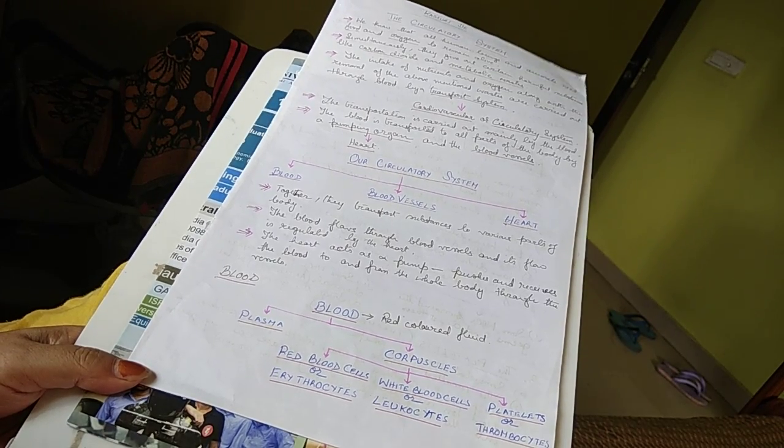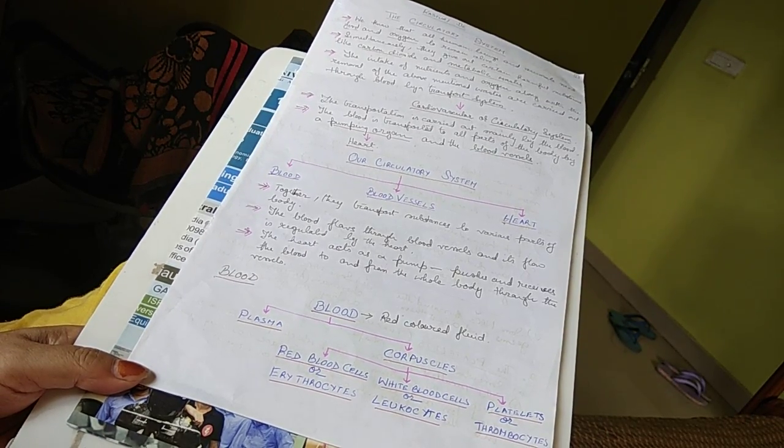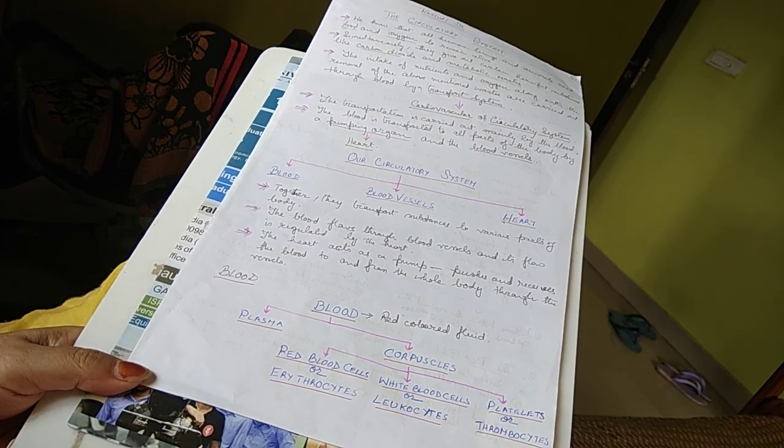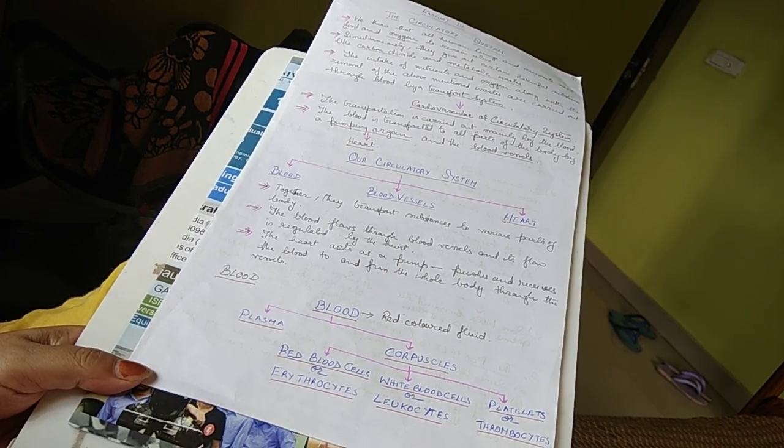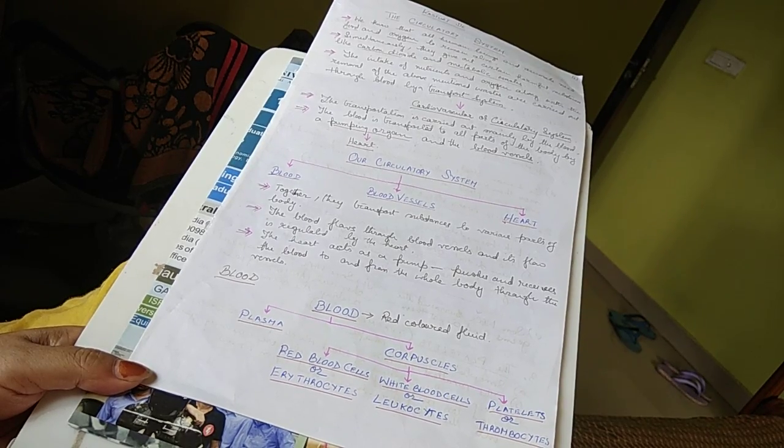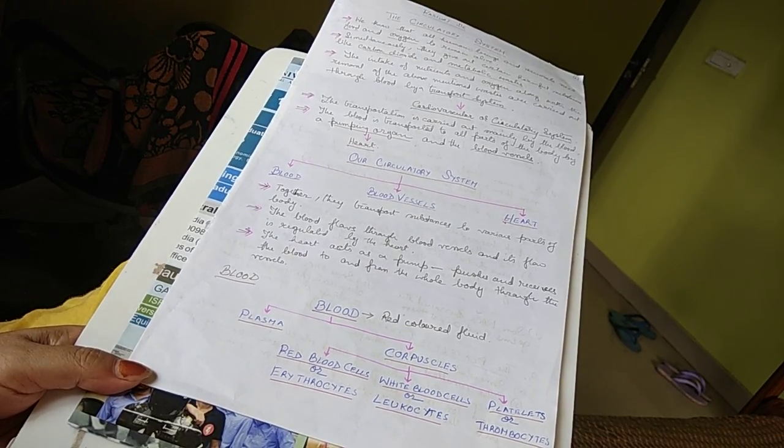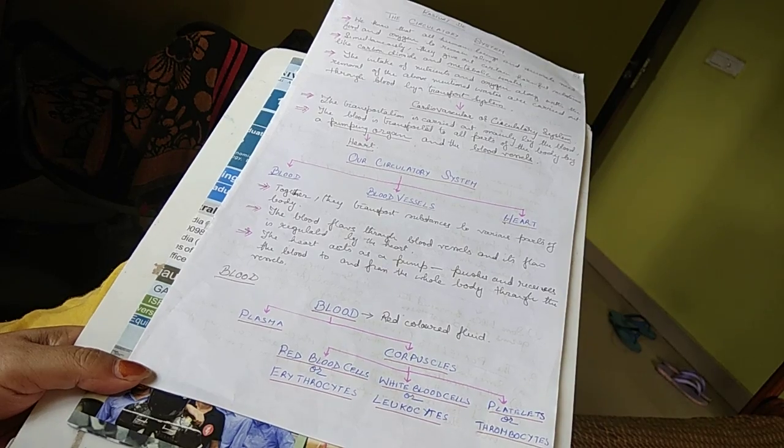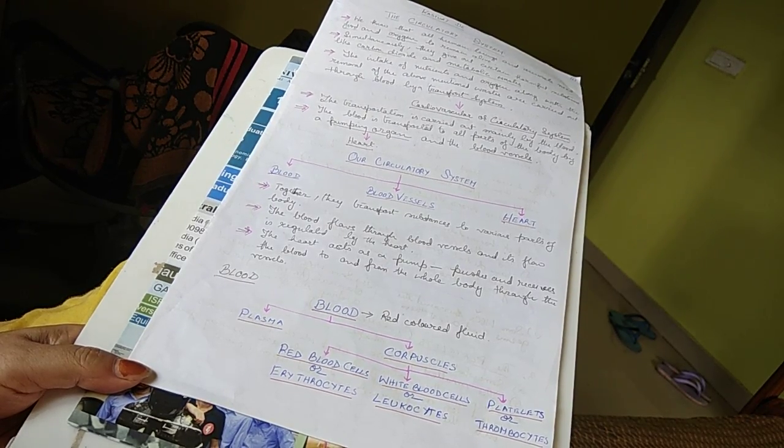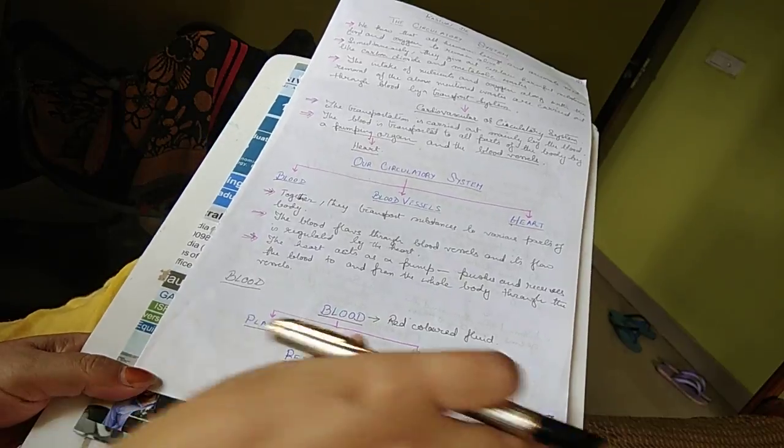Blood is red in color, which is a fluid. Blood is divided into two parts: plasma, which is the liquid part, and the cellular part, which is called corpuscles. Corpuscles are of three types: red blood cells or erythrocytes, white blood cells or leukocytes, and platelets or thrombocytes.